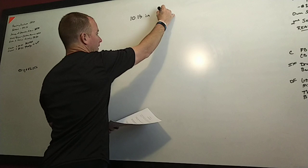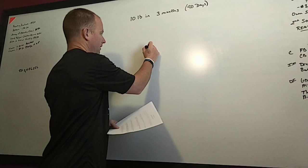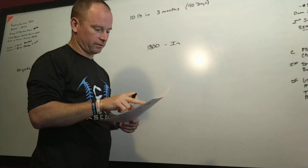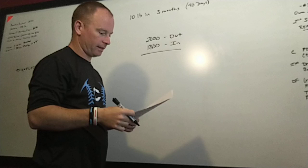It says Tom wants to lose 10 pounds in three months. We can also think about three months as 90 days. His current diet and exercise plan has him taking in 1800 calories per day. He is burning 2000 calories per day. To make life easy, we're always going to put the larger number on top. This is out.